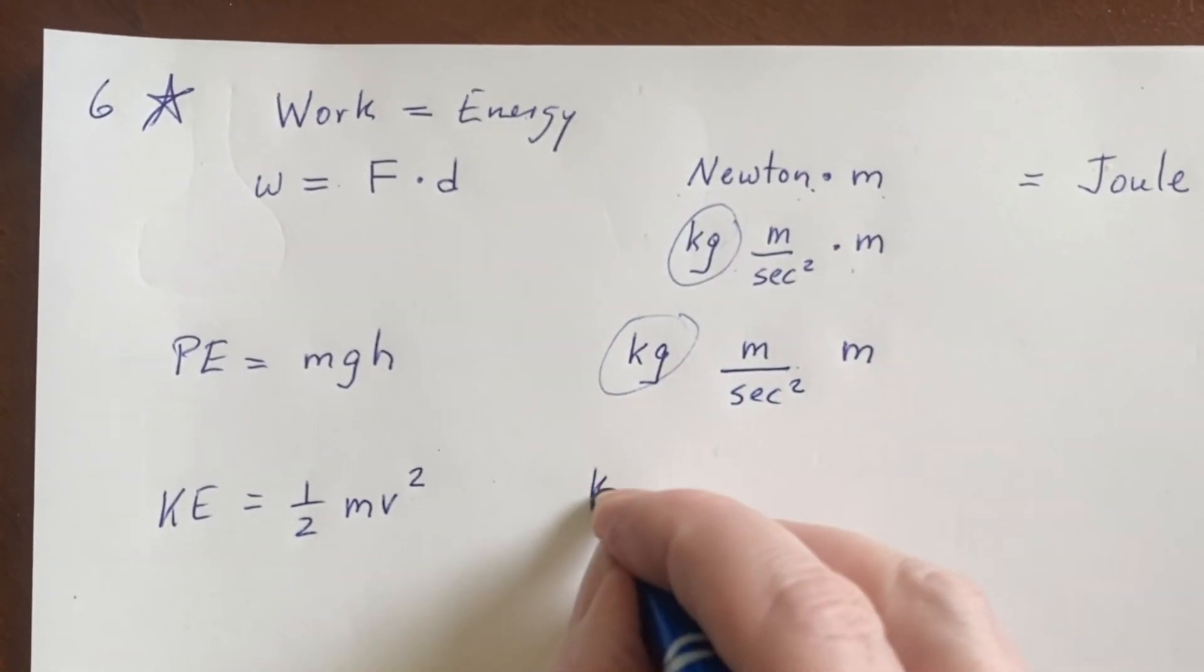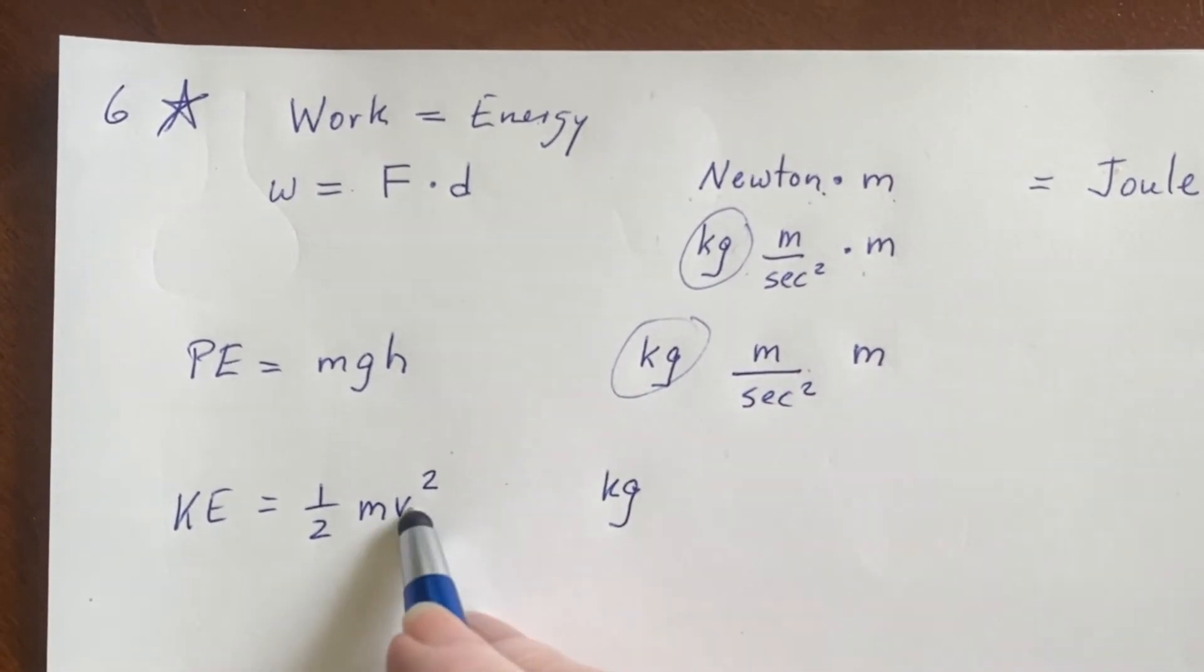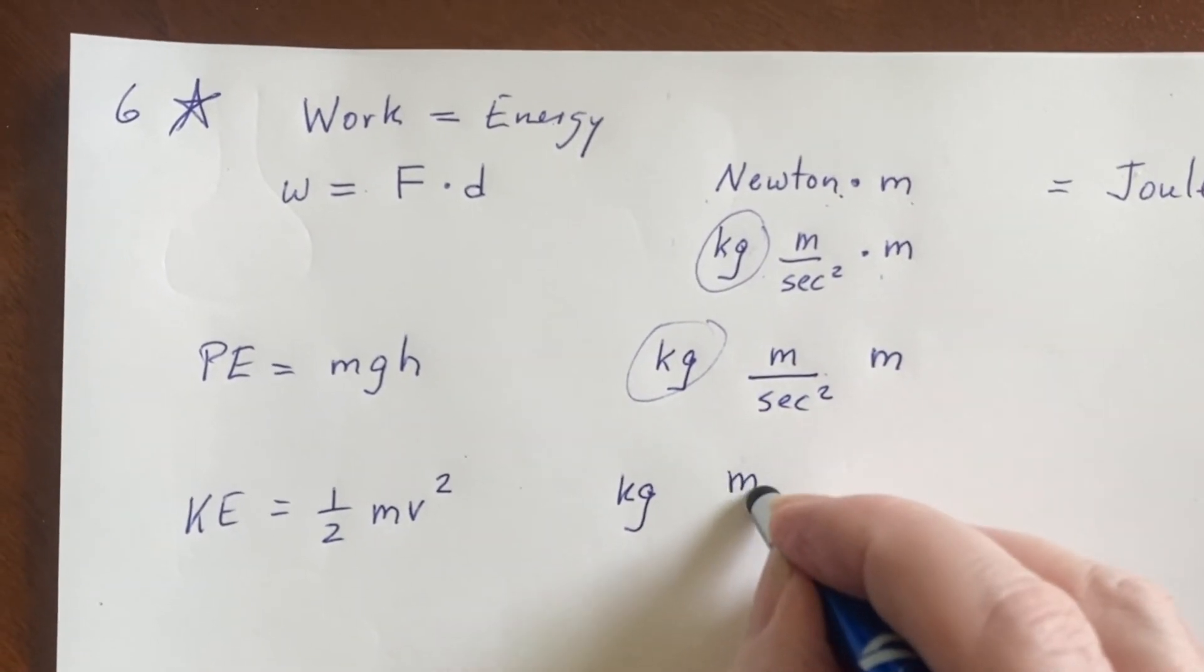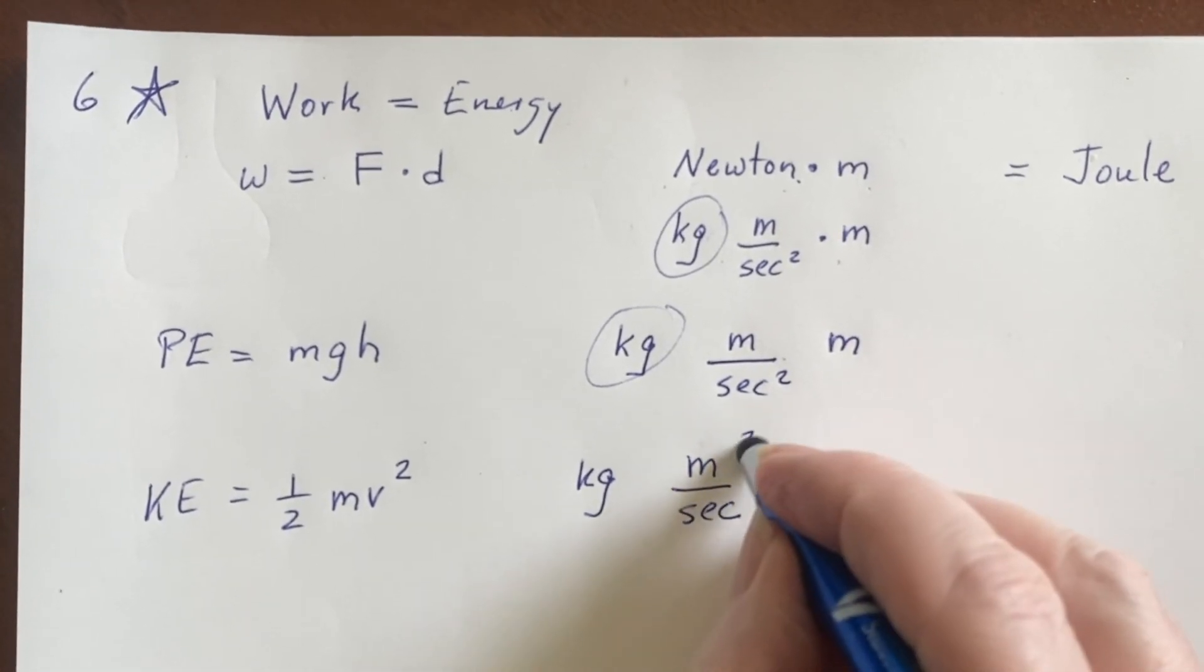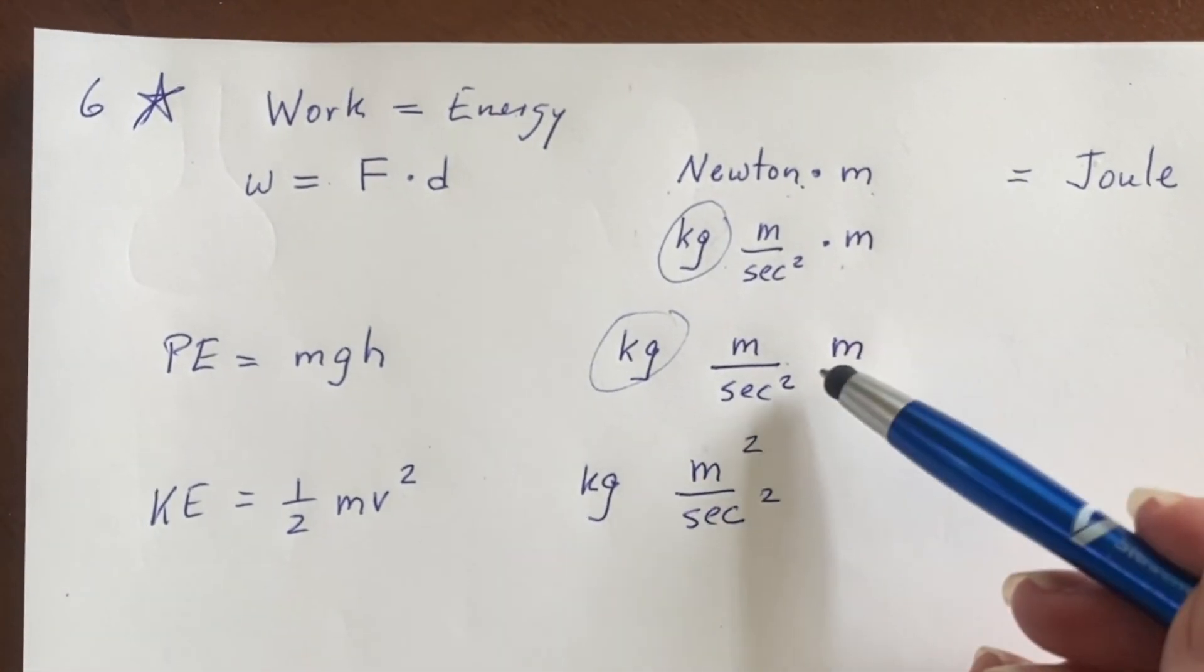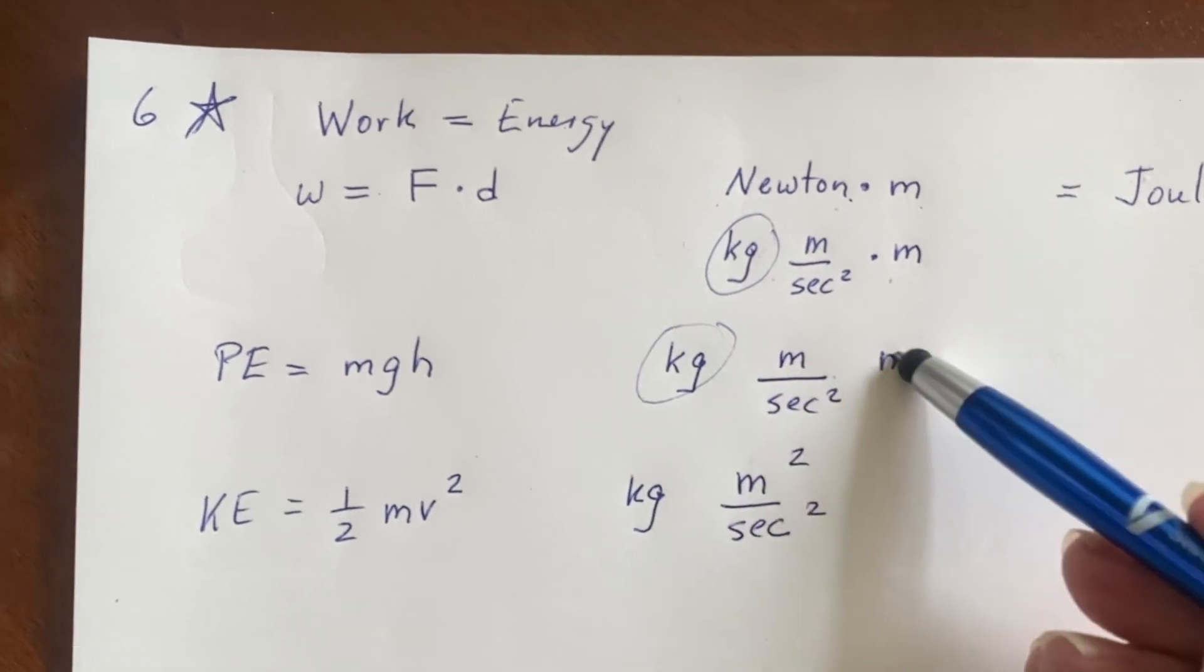Here's a mass, kilograms, and then a velocity squared. So a velocity is meters per second, but then we're going to square that, so meters squared over seconds squared. And you can see, oh that just combined the two meters into a meter squared.